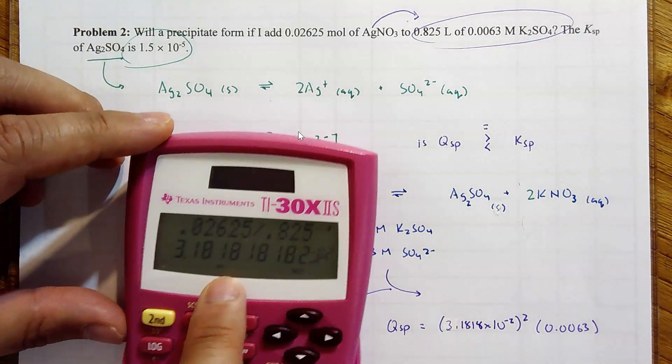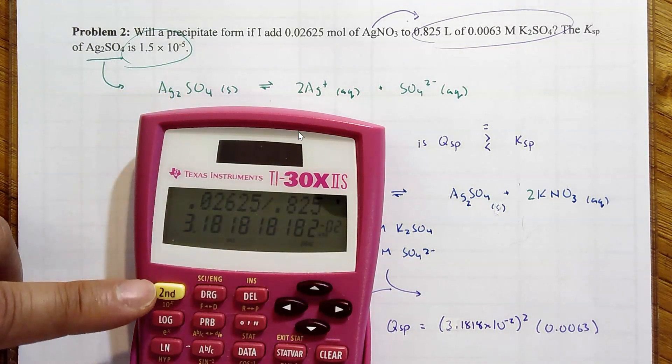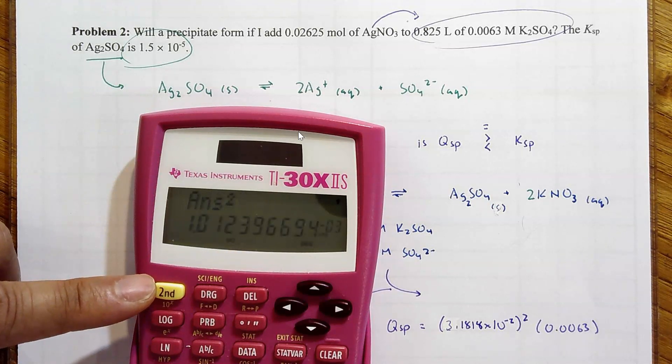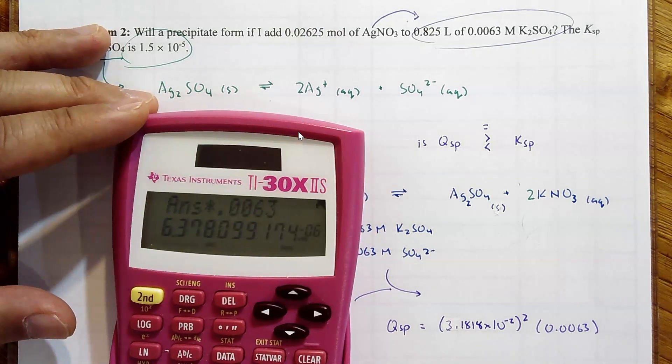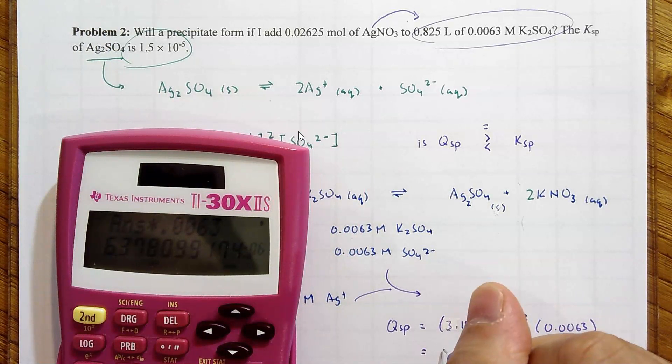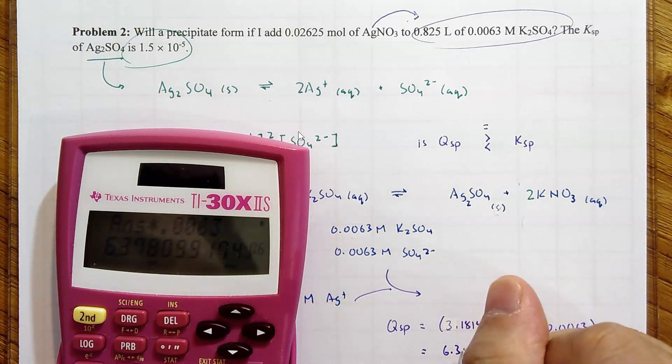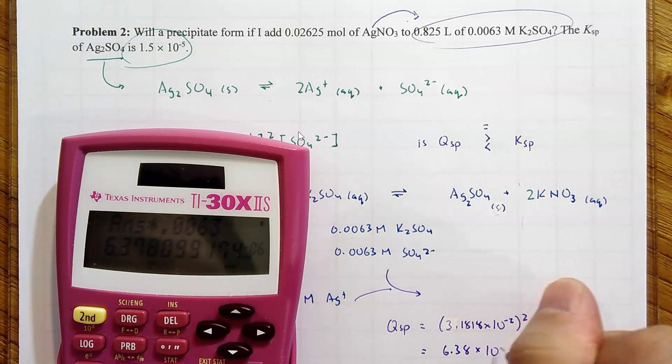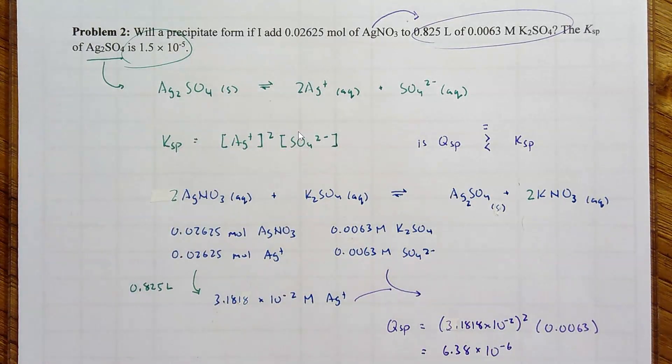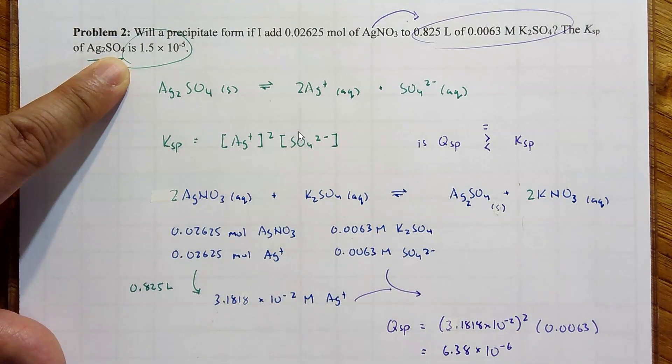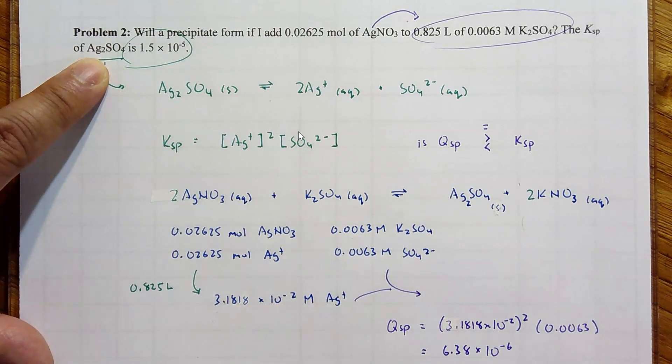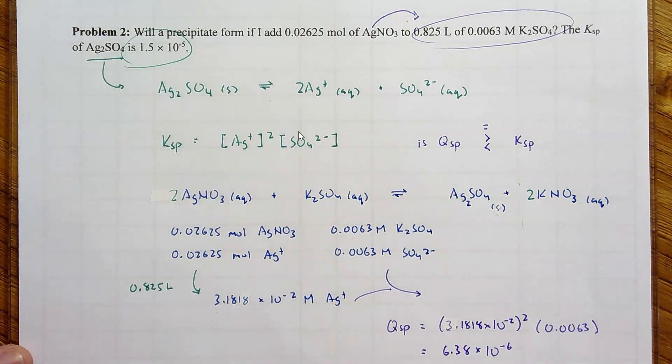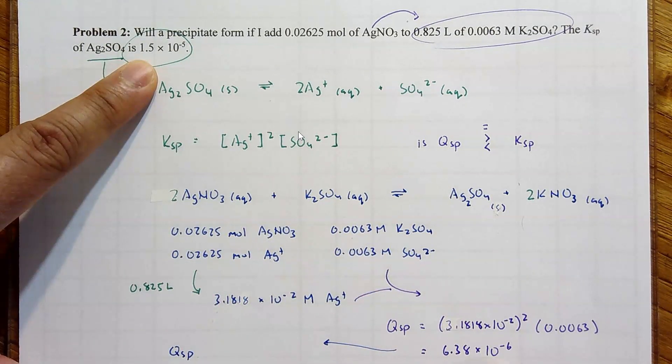Let me do the calculations. I have that saved, that concentration of silver ions. Let's square it. Equals times 0.0063 equals 6.38 times 10 to the minus 6. And we take a look at the Ksp of Ag2SO4. I did square it. I did square it.